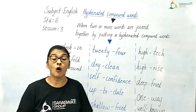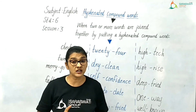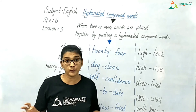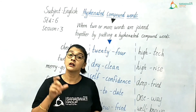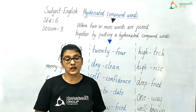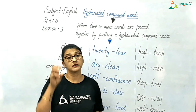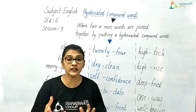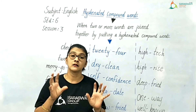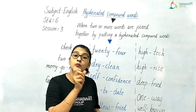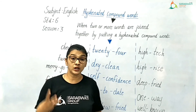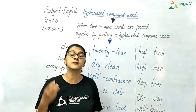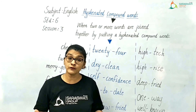Now we have learned all three types of compound words. The first type was closed compound words, where two words are combined without any space, creating a new word. Then we had open compound words, where two or more words are brought together with a space in between. Finally, the third type is hyphenated compound words, where two or more words are joined by putting a hyphen in between. I wish that all of you watch this video lecture repeatedly to understand all three types better.